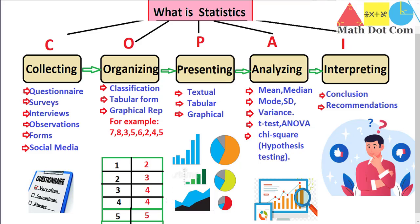Statistics is all about these five stages, conducted in every research to make meaningful, informed decisions. In the first stage you have raw data, and in the last stage you extract useful information from that data. For example, to find which fruit fifth graders prefer for lunch, you collect data from fifth graders using a questionnaire or survey, organize it in a tabular form or Excel sheet, present it in a graphical format to compare which fruit is most liked, then analyze the responses — calculating the mean or other measures — and finally interpret whether it is apple, mango, banana, or another fruit.